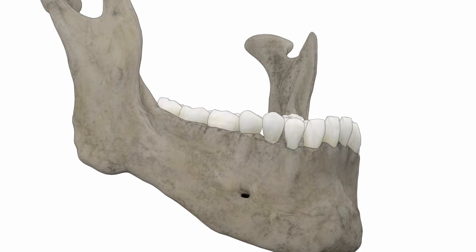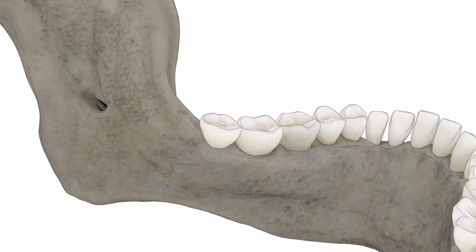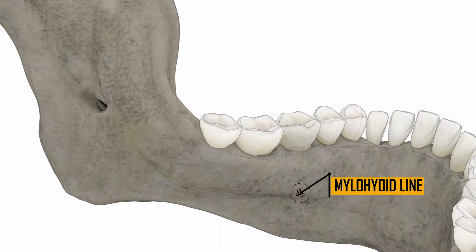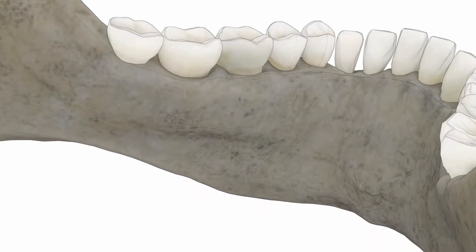On the inner surface of the mandible, the mylohyoid line is a prominent ridge that runs obliquely downwards and forwards from below the third molar tooth to the median area below the genial tubercles. Below the mylohyoid line, the surface is slightly hollowed out to form the submandibular fossa, which lodges the submandibular gland.